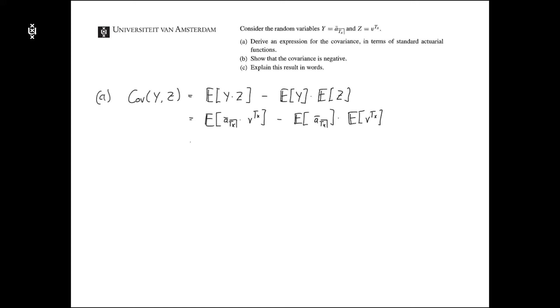Well, we know that this a bar tx, this one, this one is equal to, can be rewritten as, as 1 minus v tx over delta, where delta is the force of interest.